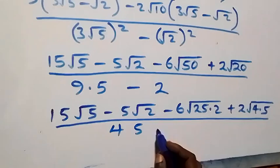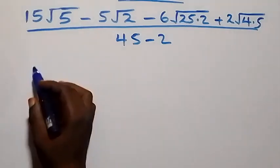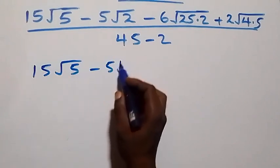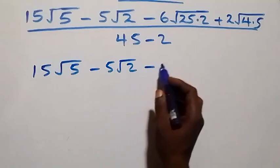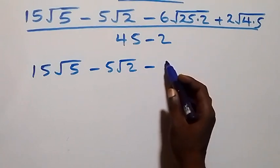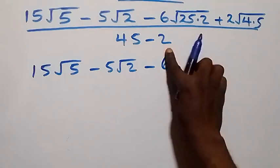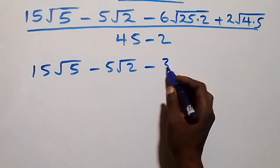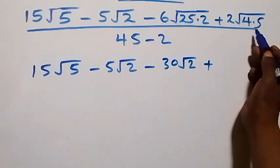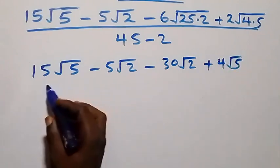So we have 15 root five minus five root two, then minus — we separate root 50 as root 25 times root 2, and root 25 is 5, so we get 6 times 5 which is 30 root two — then plus root 4 times root 5, that is 2 times 2 giving plus 4 root five, all divided by 45 minus 2.